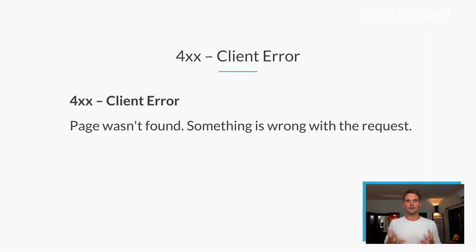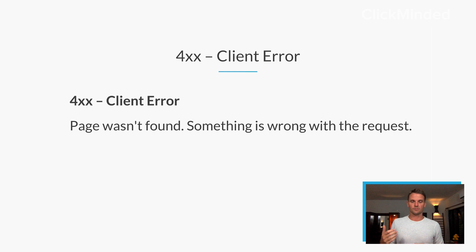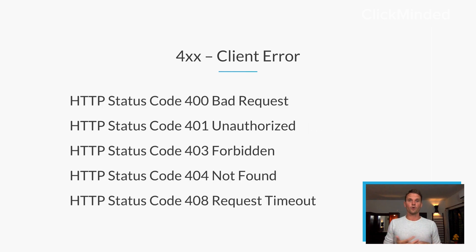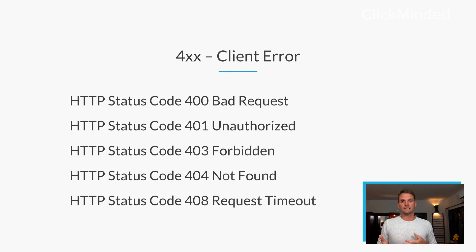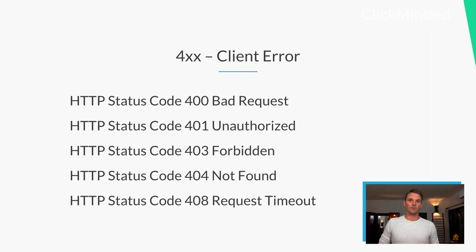The 400 block is for client errors — that means the page wasn't found, something is wrong with the request. Whatever is happening on the client side is the issue. A 400 might be a bad request, a 401 unauthorized, a 403 forbidden. The basic idea is that any status code that comes in as a 400 is a client error.